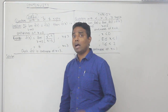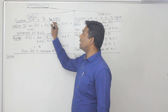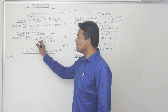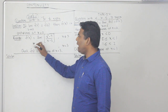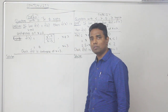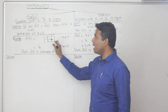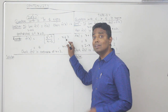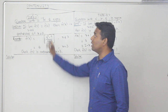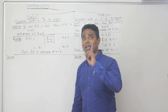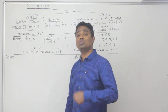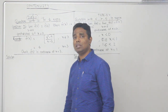First, we will talk about Type 1. In Type 1, the question has equal to sign and not equal to sign. The example is: f(x) = (x² - 9)/(x - 3), where x is not equal to 3; and f(x) = 6, when x is equal to 3. The question is: Check if f(x) is continuous at x = 3.